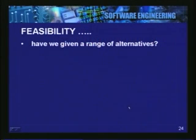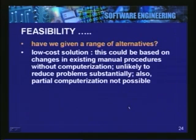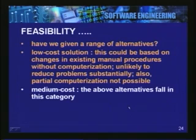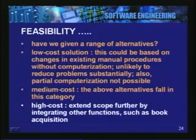Before working that out we may ask ourselves: have we given enough number of alternatives? Are there low cost, medium cost, high cost kind of alternatives given to the user? There can be a low cost solution which can completely avoid computerization - it might re-examine the kind of record keeping and card system we are using. We have noted that partial computerization is not possible. The medium cost solution is what we have discussed - the 2 solutions fall in this category. And we can also think of some high cost solution such as buying a product available in the market which might do more than circulation, even taking care of the book acquisition system.